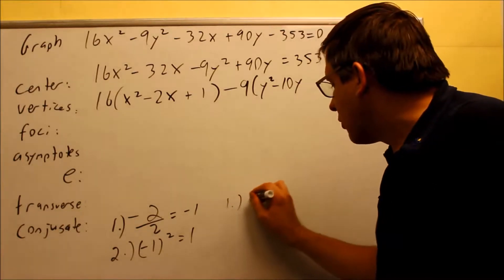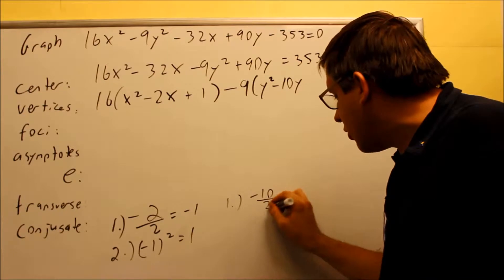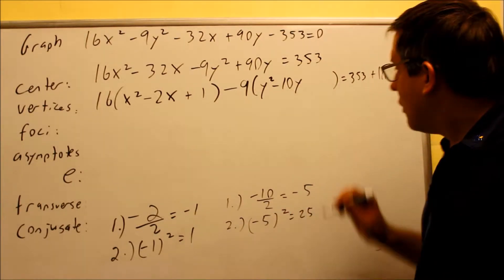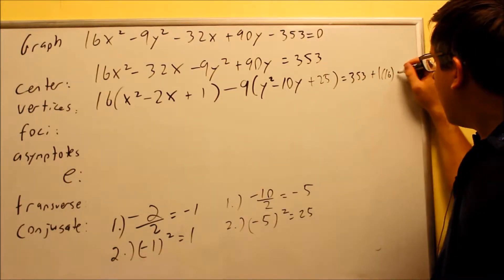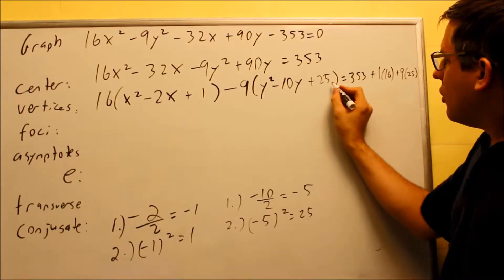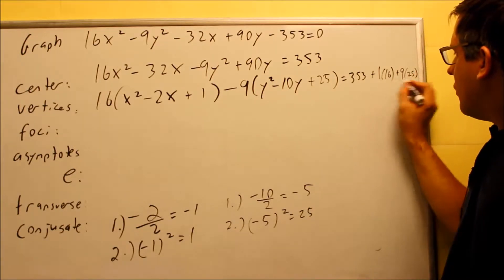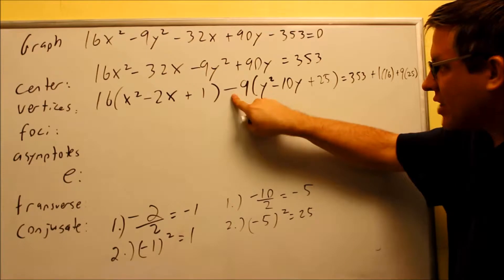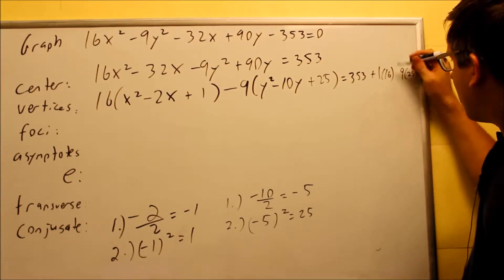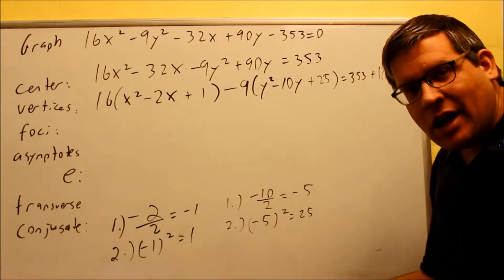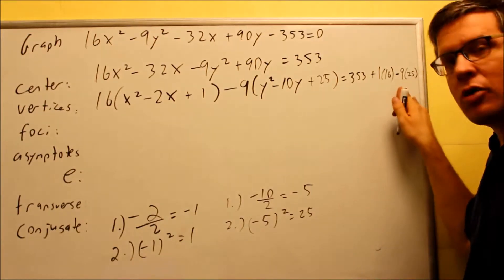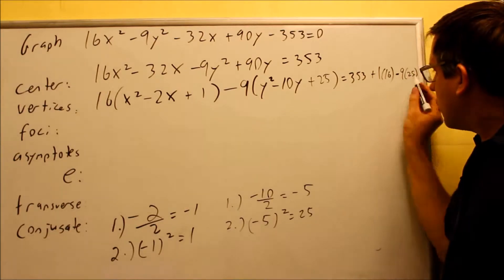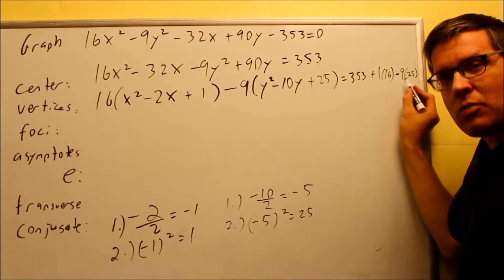Do the same for the y group. Step 1: take negative 10, divide by 2 to get negative 5. Step 2: negative 5 squared equals positive 25. Add 25 inside the parenthesis. Over on the right side, a common mistake is putting a plus — it must be a minus, because there's a minus sign in front of that group. So you're adding a negative 9 times 25 on the right. Be very careful here — this is where most people make the mistake.